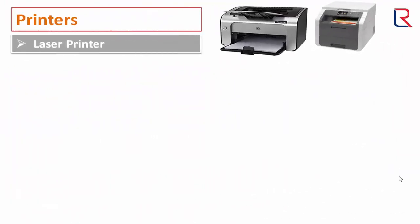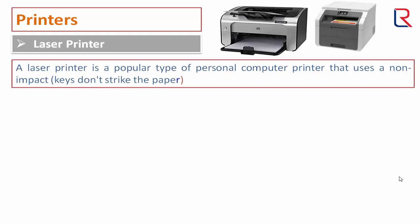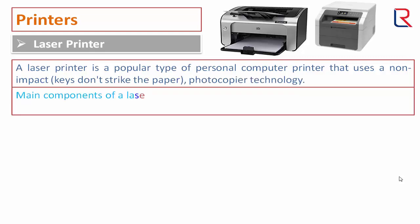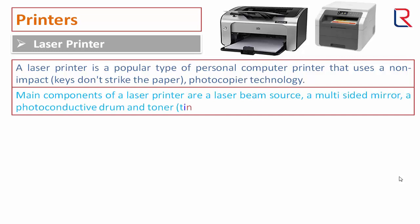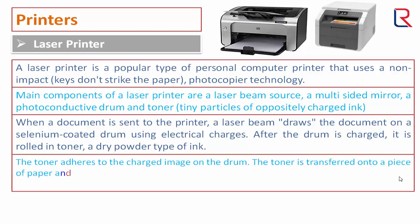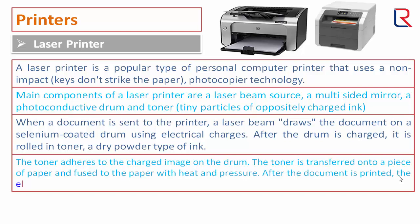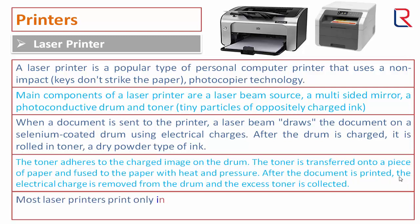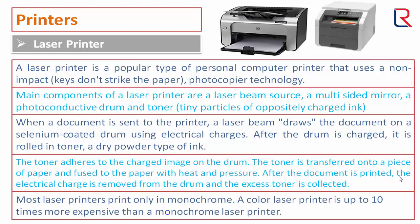A laser printer is a popular type of personal computer printer that uses non-impact photocopier technology. Its main components are a laser beam source, a multi-sided mirror, a photoconductive drum, and toner. When a document is sent to the printer, a laser beam draws the document on a selenium-coated drum using electrical charges. The drum is then rolled in toner, a dry powder ink, which adheres to the charged image. The toner is transferred onto paper and fused with heat and pressure. Afterwards, the electrical charge is removed and excess toner is collected. Most laser printers print only in monochrome; a color laser printer is up to 10 times more expensive.